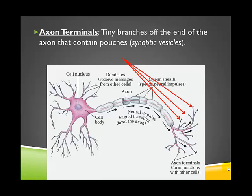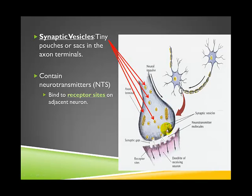The next structure of the neuron are the axon terminals. Terminal just means the end of something. These are the tiny branches that sprout off at the end of the axon. And inside of these branches, at the very end, are these little packages — these synaptic vesicles. These tiny pouches or sacs contain neurotransmitters, a very important chemical in the communication process between neurons.